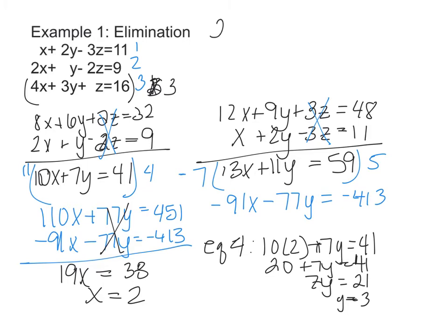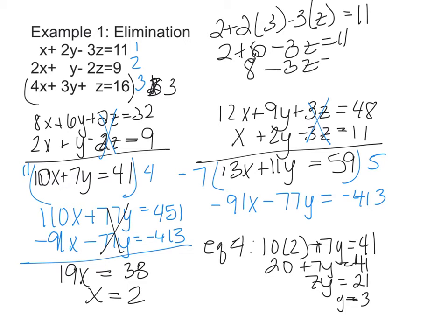I'm going to do it all the way back up here at the top because I'm out of room. So x is 2, so 2 + 2 times y, which is 3, - 3 times z, that's what I'm solving for, = 11. So 2 + 6 - 3z = 11, 8 - 3z = 11, subtract 8, negative 3z = 3, so z = negative 1. And my ordered triple for my answer is always alphabetical: 2, 3, negative 1. That's my final answer.